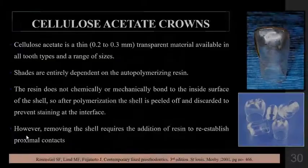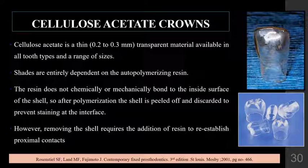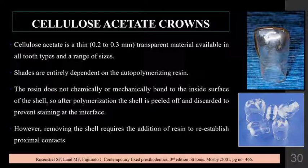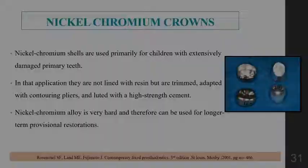Cellulose acetate crowns are made of transparent material, are thin (around 0.2 to 0.3 mm), and are available for all tooth types and a range of sizes. The shade depends on the resin used for the provisional restoration, and the resin does not bond with the shell. The shell is peeled off after polymerization of the resin. During peeling, there can be deficient proximal contacts, which must be re-established by addition of resin.